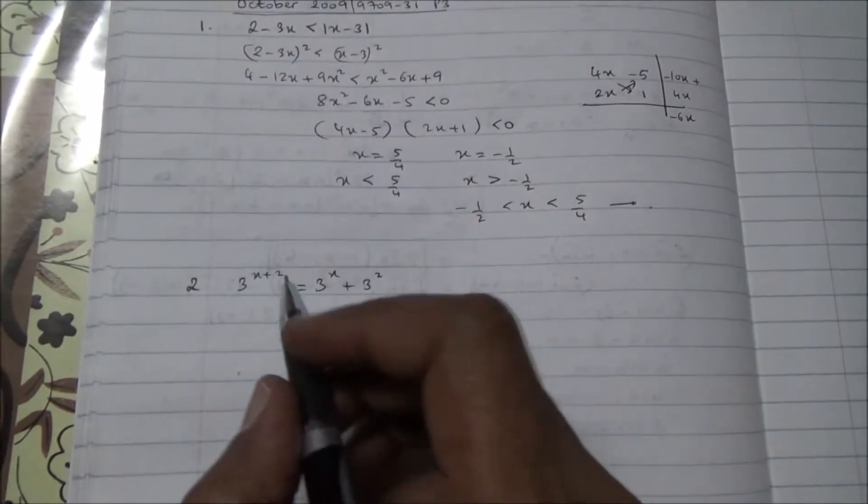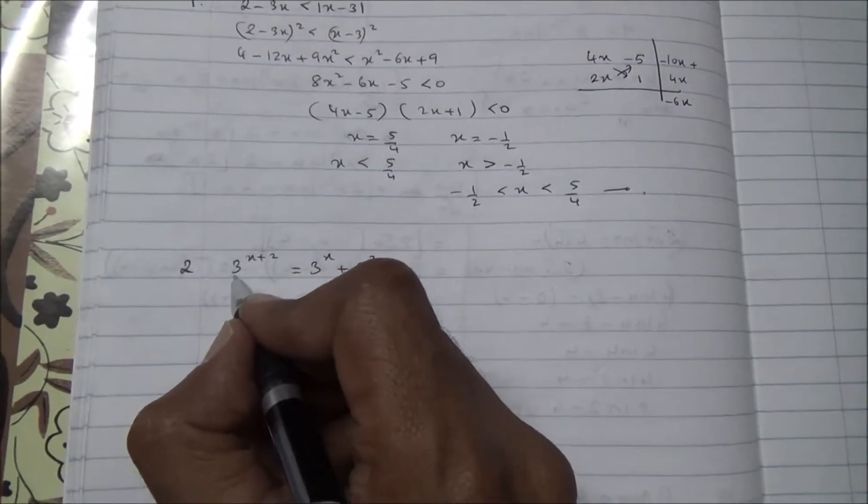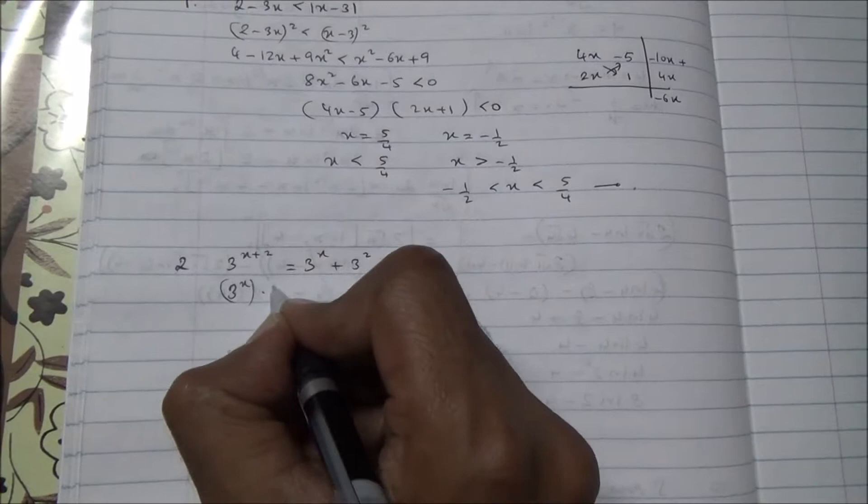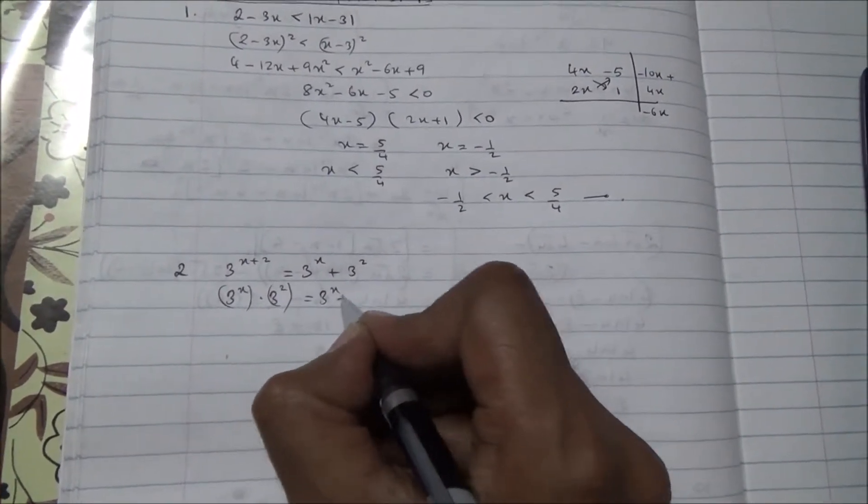Now then, for question number 2 of the same paper, we have this equation to solve to find the value of x. This one here can be written as 3 to the power of x times 3 to the power of 2 is equal to 3 power x plus 9.